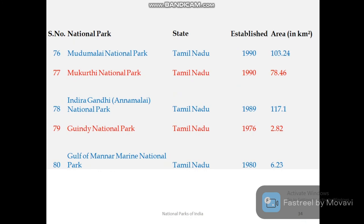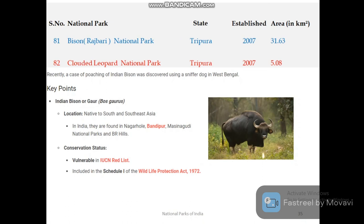Tamil Nadu has five national parks: Mudumalai, Mukurthi, Indira Gandhi, Guindy, and Gulf of Mannar Marine National Park. In total, there are around six marine national parks in India. Tripura has two national parks.